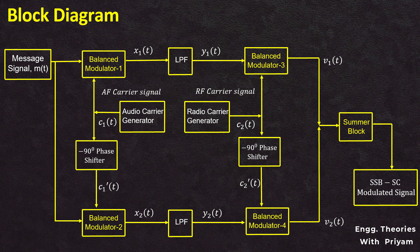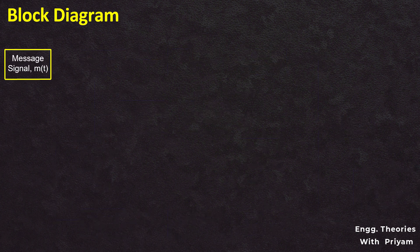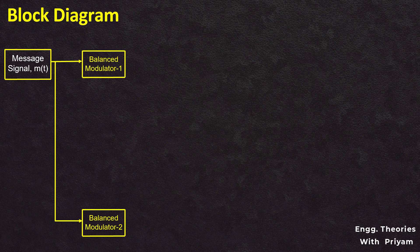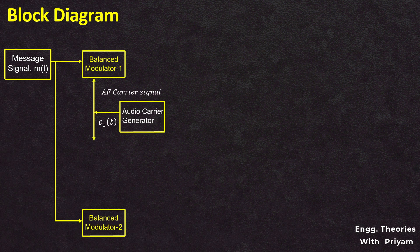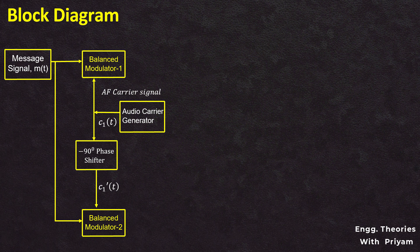Here, we will use two different types of carrier signal generators. The difference between these two carrier signal generators is that one generates an audio frequency carrier signal and another generates a radio frequency carrier signal. The radio frequency carrier signal will have a greater frequency than the audio frequency carrier signal. At first, two identical message signals M(T) are given as the input to balanced modulator 1 and 2. Then, audio frequency carrier signal C1(T) and the 90-degree phase shifted audio frequency carrier signal C1'(T) are given as inputs to balanced modulator 1 and 2 respectively. With these two inputs, balanced modulator 1 and 2 generate the signals X1(T) and X2(T).